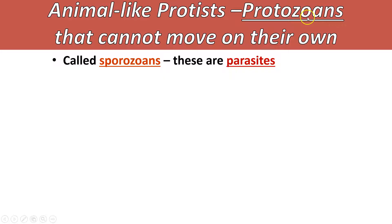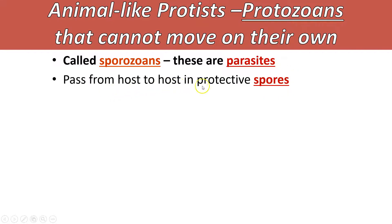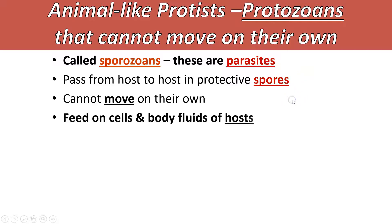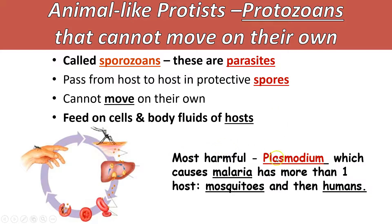The fourth type of protozoan are ones that don't move on their own - they're called sporozoans and they're parasites. They're parasitic not just in the sense of a symbiotic relationship harming something; their movement is also parasitic - they need something else to move them around. They pass from one host to another inside protective spores, which have a hard protective armor coating on the outside. They cannot move on their own and they feed on cells and body fluids of their hosts. One of the most harmful is plasmodium, the type of protist that causes malaria.